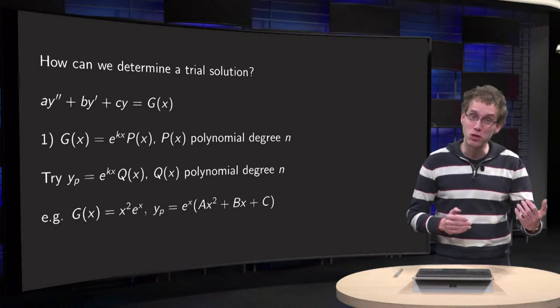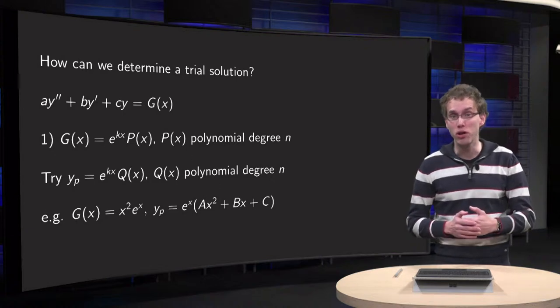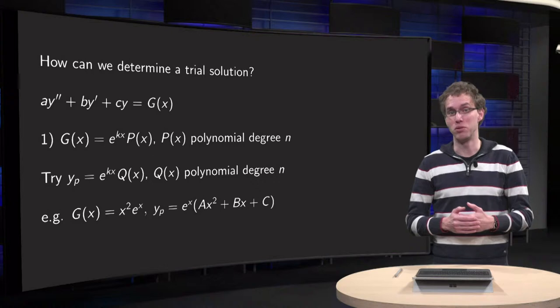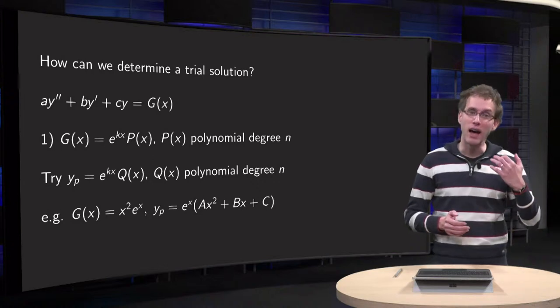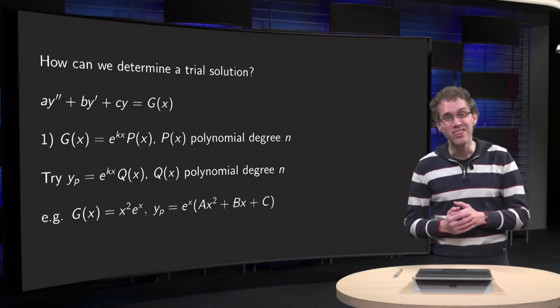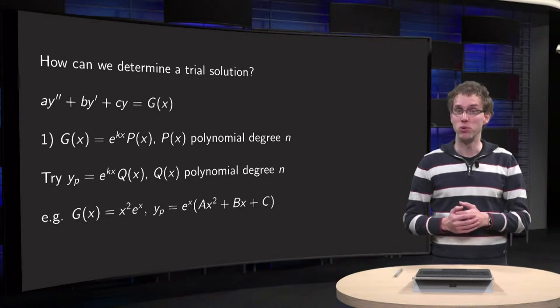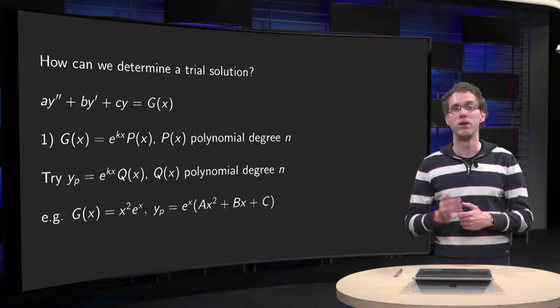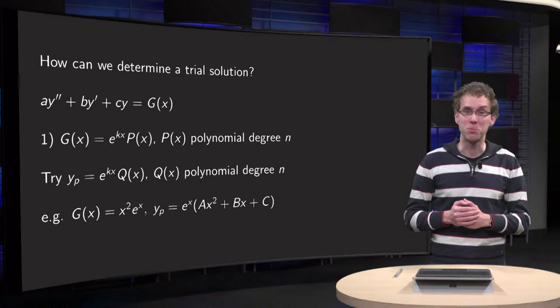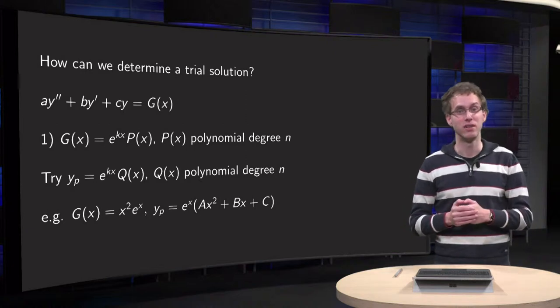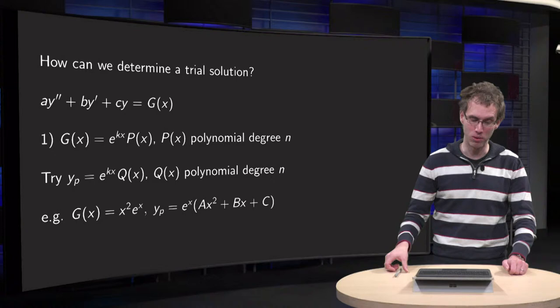If you include too many terms, you have to do a lot of computations and in the end most of them are zero. And if your trial solution does not contain the correct terms, you do not find a particular solution at all. In this video we will discuss some guidelines to find a trial solution in a few common cases. So let's take a look.